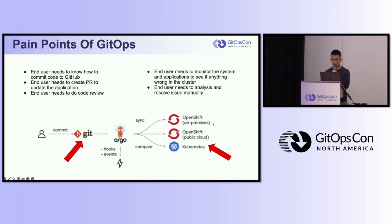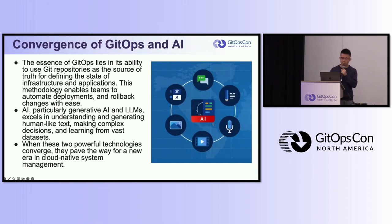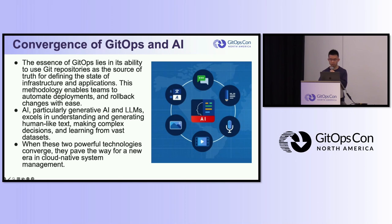So what will happen if we converge GitOps and AI? GitOps uses Git repos as source of truth and helps end users automate deployments and rollbacks. For AI, especially for generative AI and foundation models, it helps end users generate human-like text, make compact decisions, and leverage vast datasets. When those two powerful tools converge, they will offer a lot for cloud native apps.